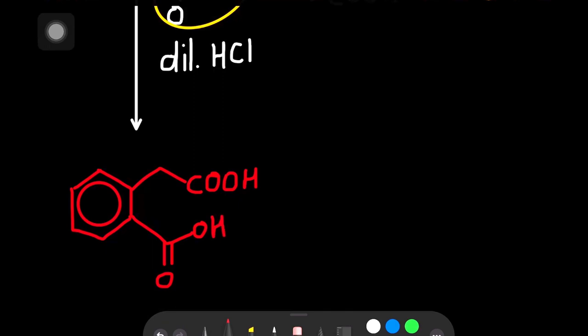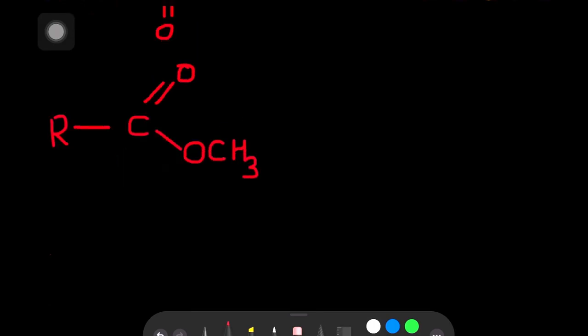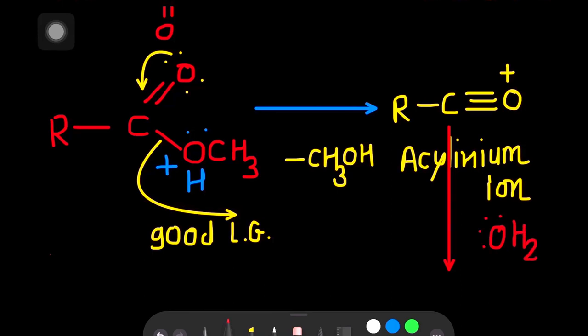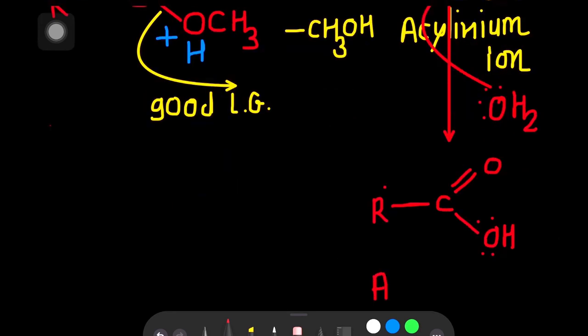The hydrolysis of ester also gives carboxylic acid. In acidic medium, oxygen is protonated by H+, oxygen bears positive charge. This oxygen gives the lone pair and this molecule will remove, forming acylium ion. Water is still available in the reaction. Water H2O will attack this carbon, oxygen becomes neutral, and finally we get carboxylic acid. This is the hydrolysis of ester to carboxylic acid.